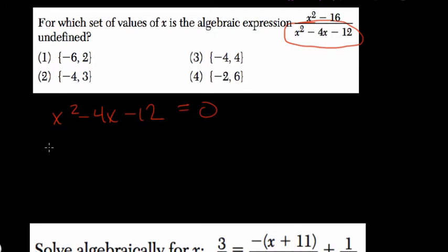When would it equal 0? Let's factor it. Put our x's in here. And now we're trying to find factors of negative 12 that add to negative 4. So I know that 6 times 2 is 12, that's perfect. Negative 6 times positive 2 is negative 12, add them up, we get negative 4, and we're done.